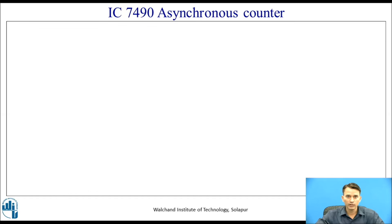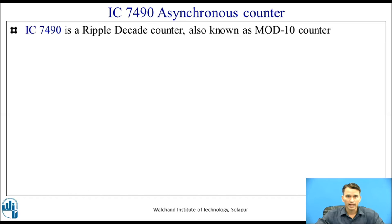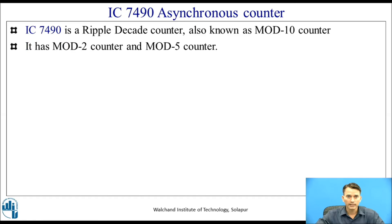IC7490 is an asynchronous counter. It is a ripple decade counter, also known as a mod-n counter. IC7490 is also known as a BCD counter because it counts from 0 to 9. It has a mod-2 counter and a mod-5 counter.